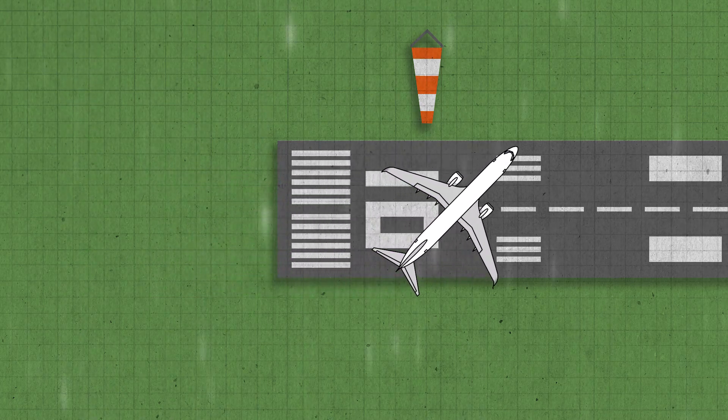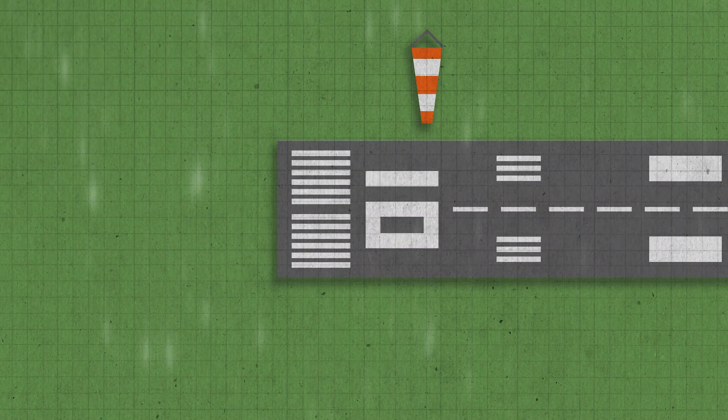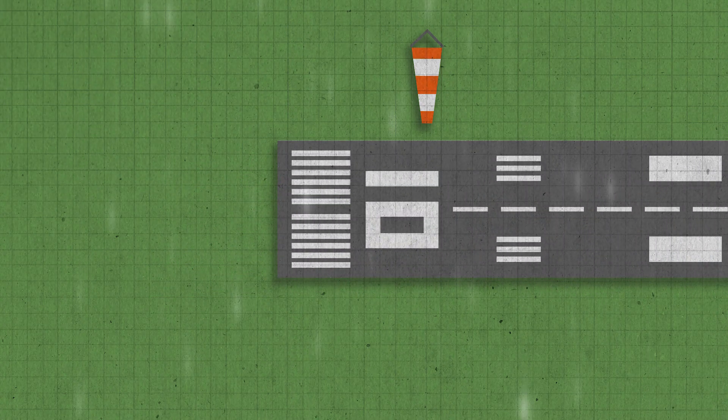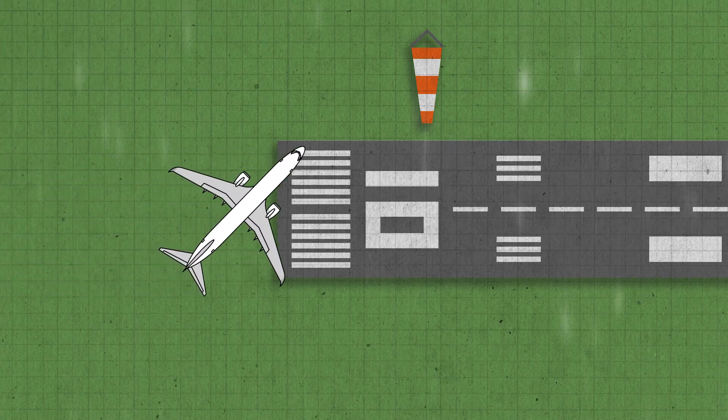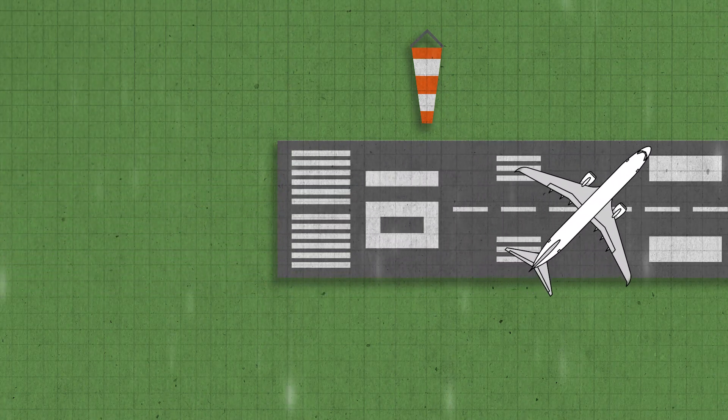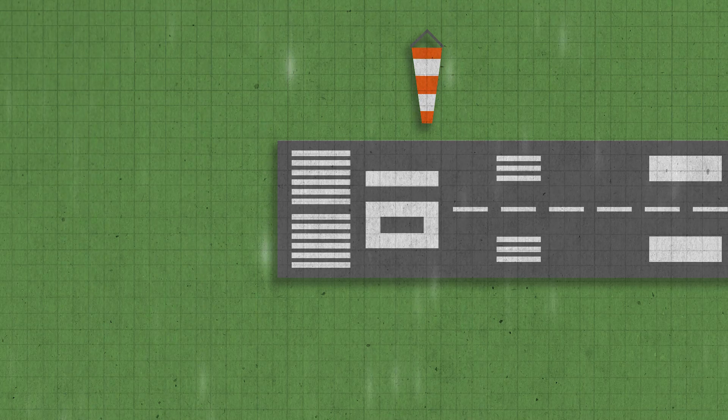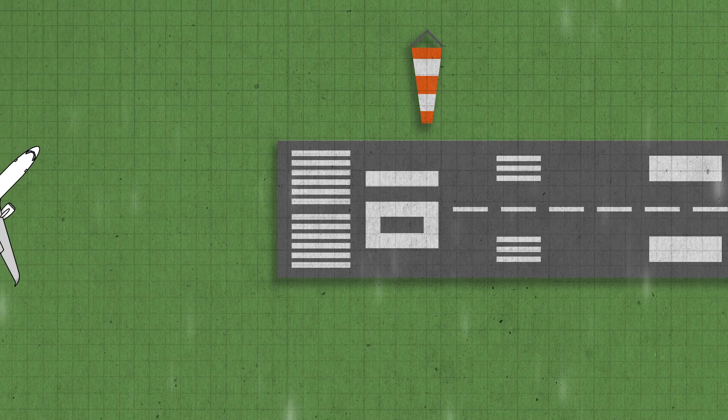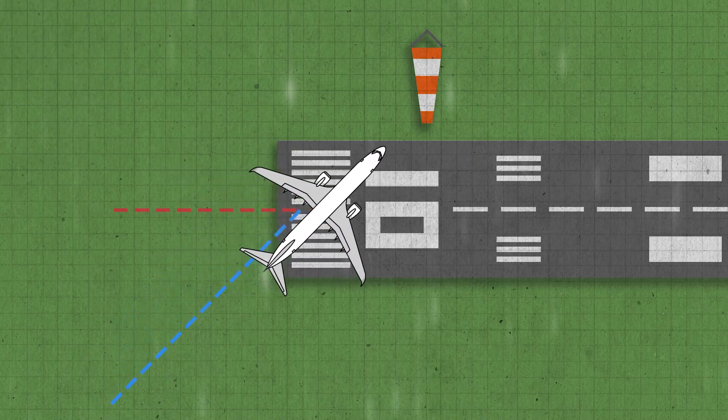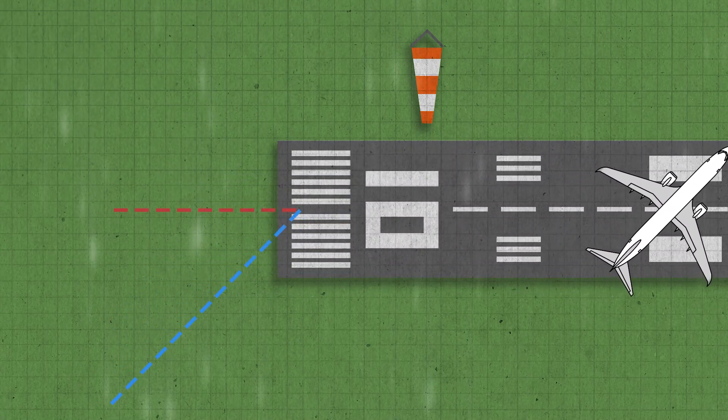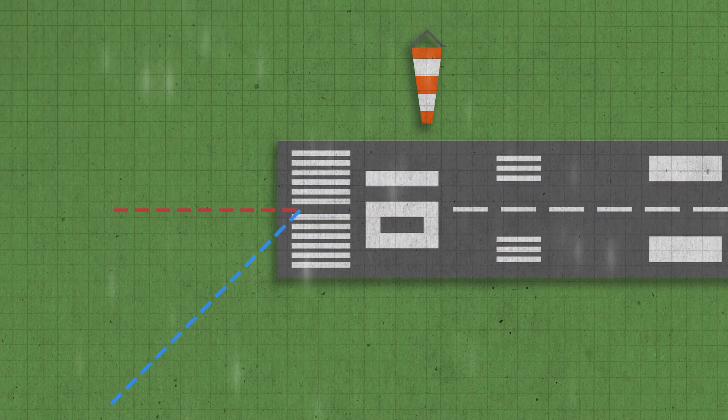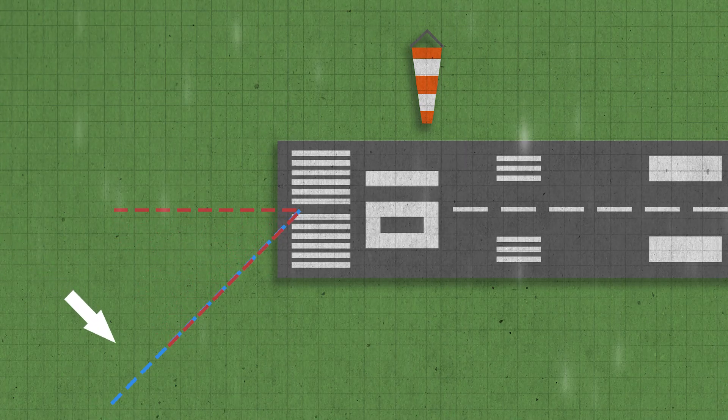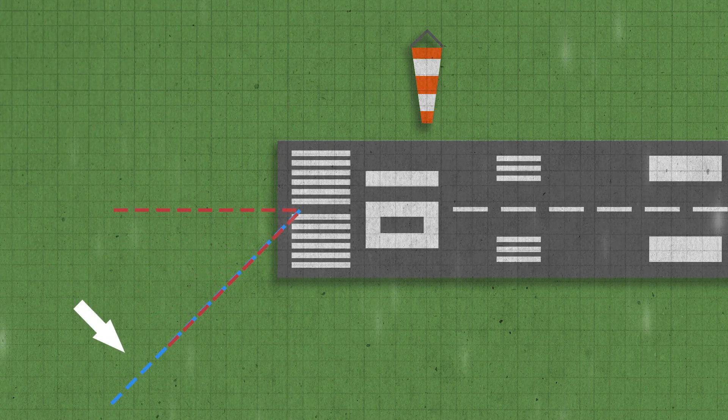Now, which of these cases requires more fuel to travel the same distance? Well, it should be pretty intuitive that fighting a crosswind requires extra fuel. If we look at the path the airplane takes through the air and compare it to the one it took over the ground, we see that while it's traveled the same distance in the real world, the plane will feel like it's flown a much longer distance diagonally through the air. This extra length represents the extra fuel that the plane has to burn.